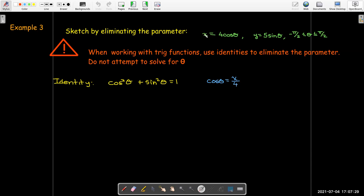And then I can solve for cosine theta. Cosine theta is x over 4. Solve for sine theta. Sine theta is y over 5. And now I'll substitute into my identity. There's no more theta, right? I have quantity x over 4 squared plus quantity y over 5 squared. And that's going to equal 1. So multiplying that out, I see I have the equation of an ellipse.